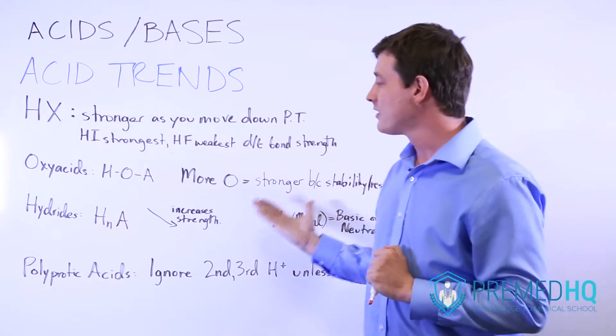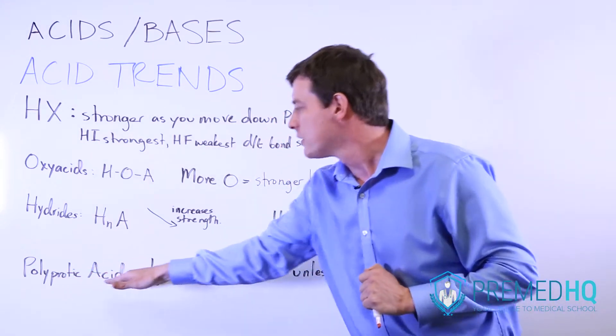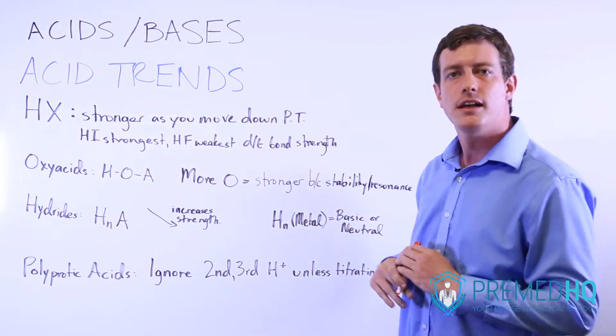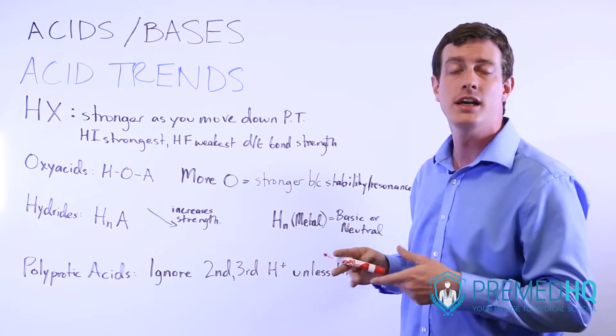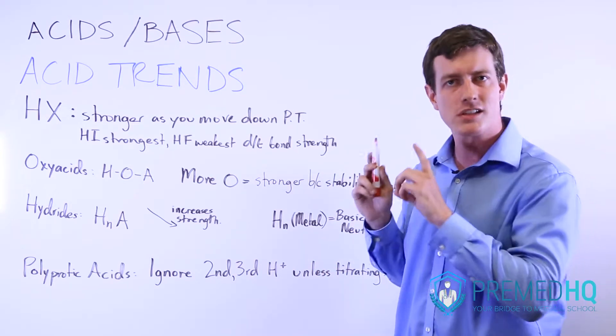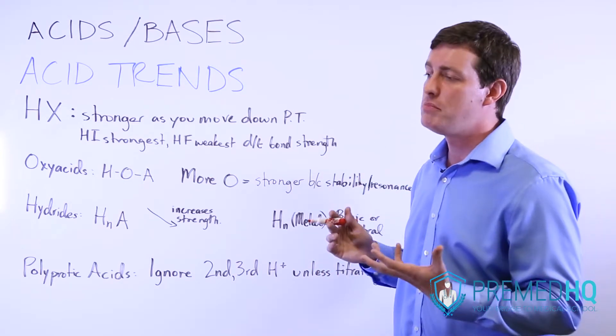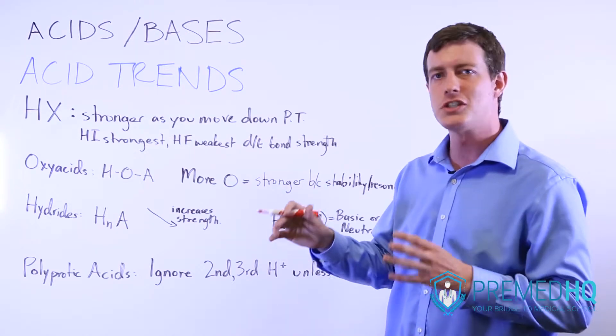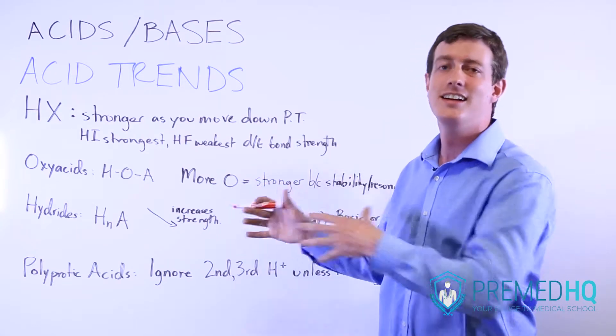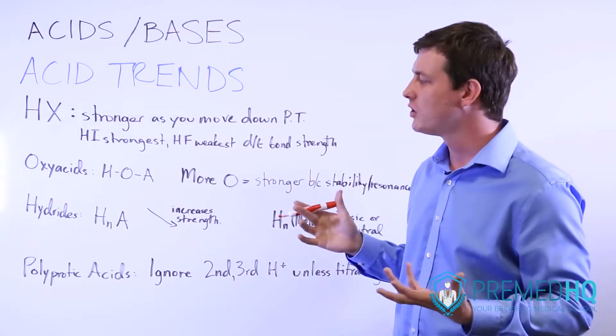And finally, one other thing to be aware of is that whenever you're dealing with a polyprotic acid, meaning that's an acid that has more than one proton that it can donate. So it could be H2SO4, which has two hydrogens. It could be H2CO3, which also has two hydrogens, but isn't classified as a strong acid the same way H2SO4 is.